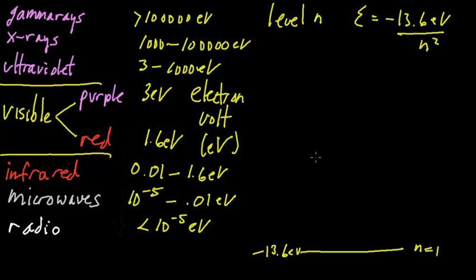And the next one up, I'm going to put it up here, is n equals 2. And that would be negative 13.6 over 4, or negative 3.4 eV. The next one up is n equals 3, and it's not quite as high. So we get n equals 3. And that would be negative 13.6 over 9. And that's about negative 1.5 eV.